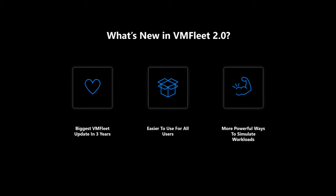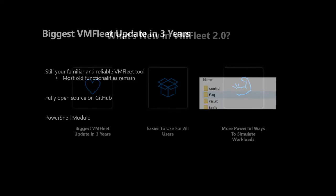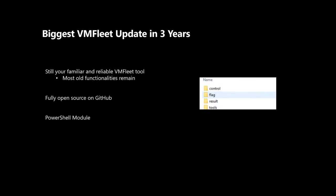Third, VMFleet 2.0 introduces more powerful ways to simulate workloads, including new diskspd flags and parameters. Given that this is the biggest update in three years, you might wonder how different it is from VMFleet 1.0. Luckily it's still your familiar and reliable tool — most original functionalities are still there. You can run a VMFleet test with diskspd commands, open watch cluster to see IOPS, graph polynomial fits if needed, and your familiar folder structure is still there. And all of this is still fully open source on GitHub, with both VMFleet 1.0 scripts and the VMFleet 2.0 module available.